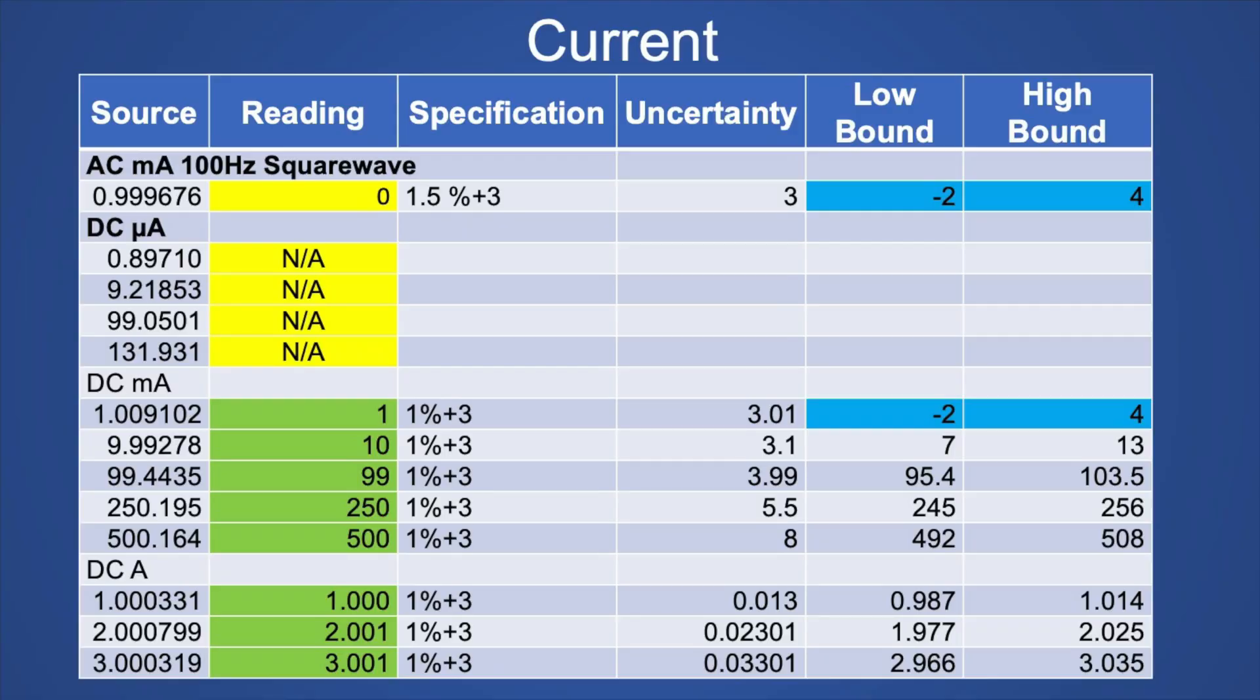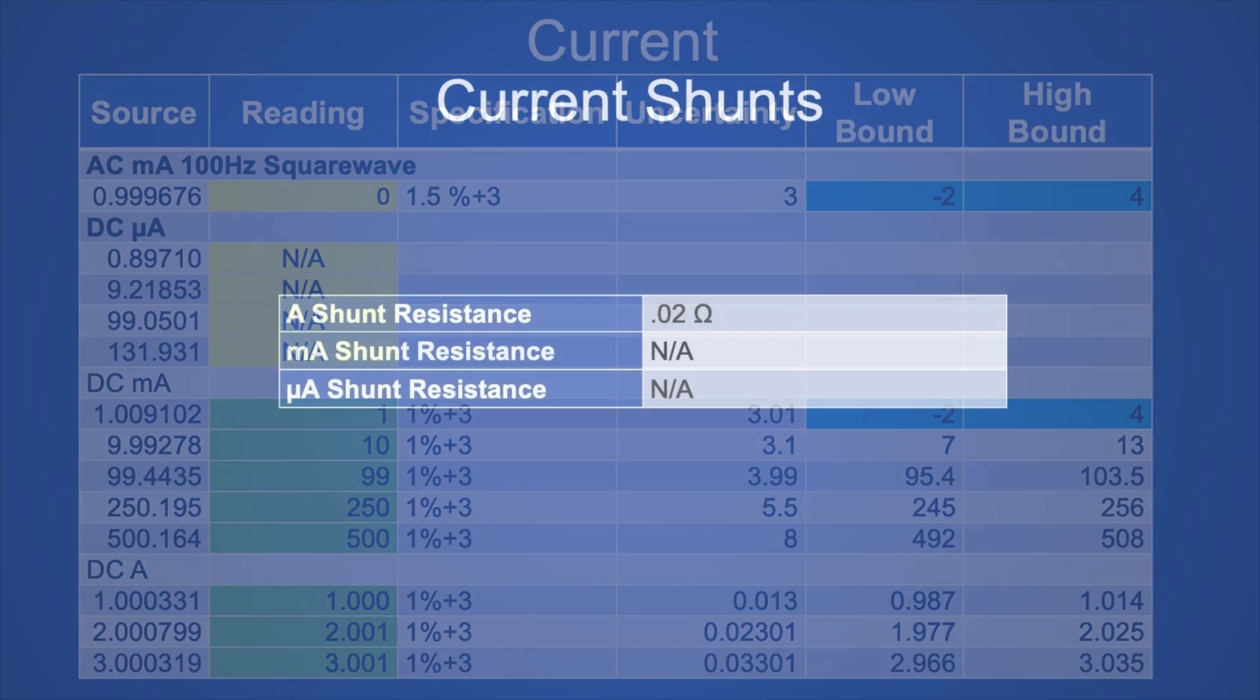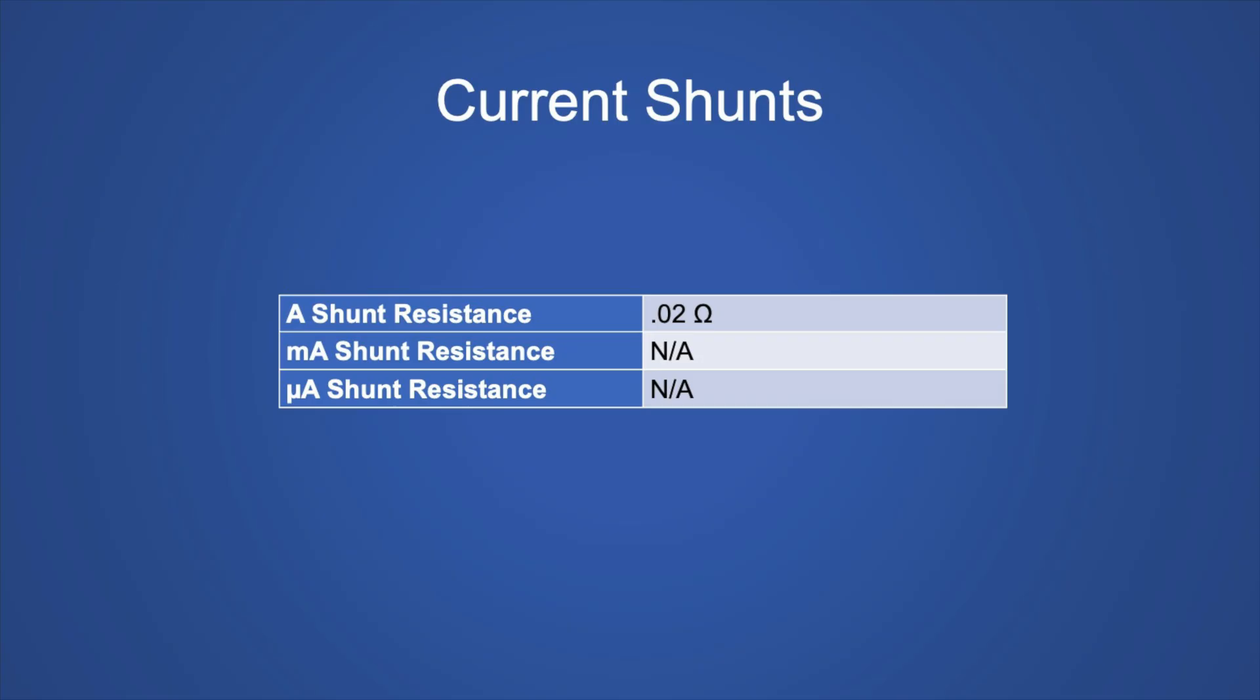Here's the current measurements. As you can see, the AC 1 milliamp didn't register. Also, the microamps don't register, because it can't read that low. But in DC, it can read down to 1 milliamp, but the variant is so big that it's really not meaningful. So from about 10 milliamps up, the DC current works fine. The amp's current shunt resistance is 0.02 ohms. Since there is no milliamp or microamp ranges, there are no shunt resistors for that.